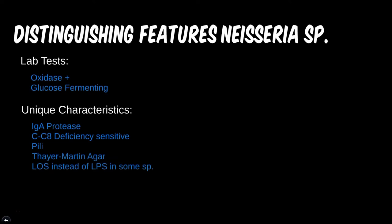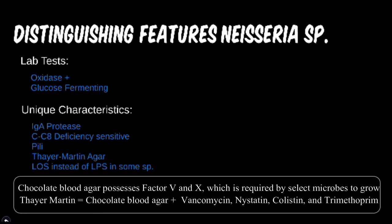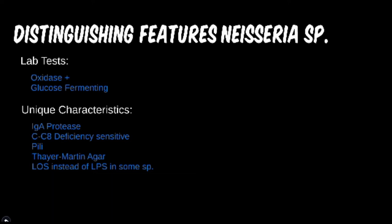Thayer-Martin agar is a very specific agar used to culture Neisseria species. It's basically chocolate blood agar but with vancomycin, nystatin, colistin, and trimethoprim antimicrobials to prevent anything except Neisseria from growing in it, so if something grows in this agar you know what genus it is.